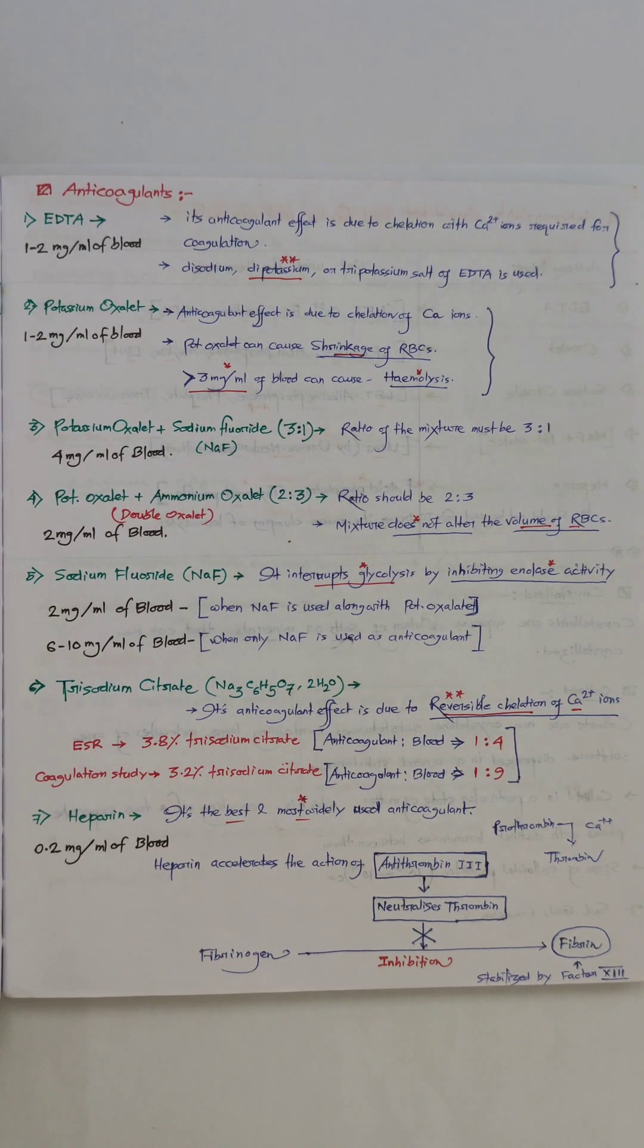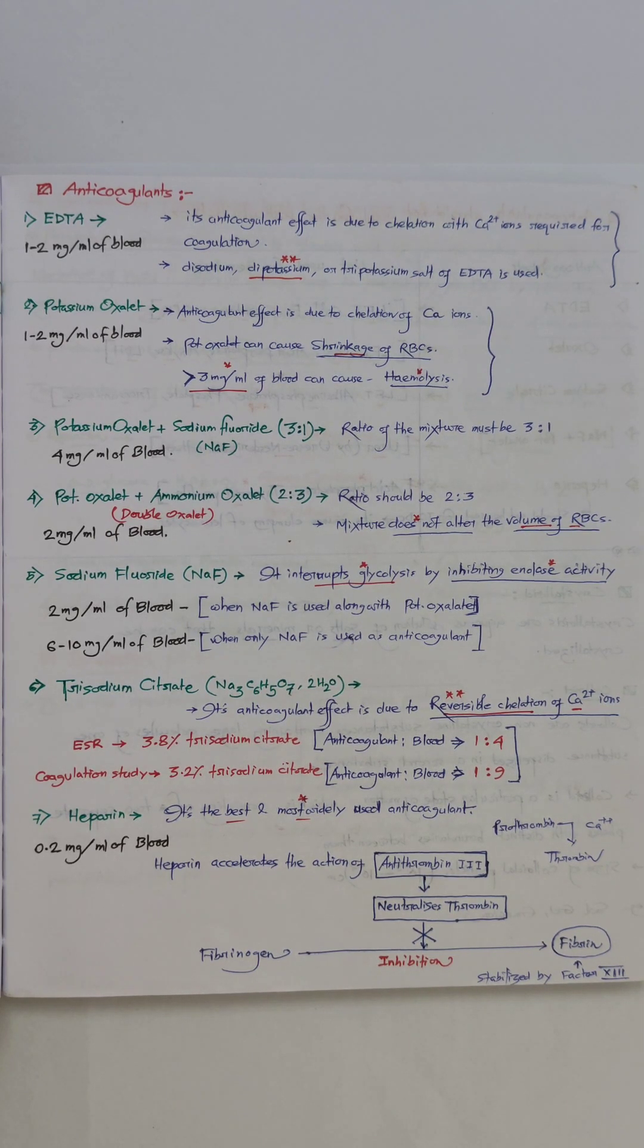Number four: potassium oxalate is used along with ammonium oxalate at 2 to 3 ratio, which is also known as double oxalate. The ratio is very important: potassium oxalate 2 parts and ammonium oxalate 3 parts. This mixture has an advantage—it doesn't alter the volume of RBCs.